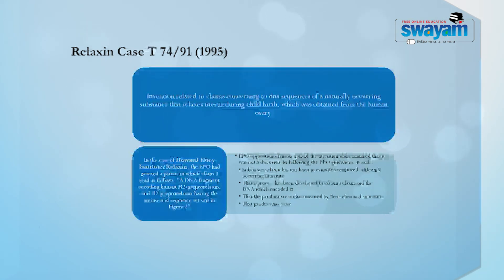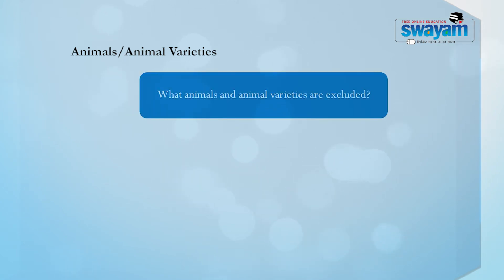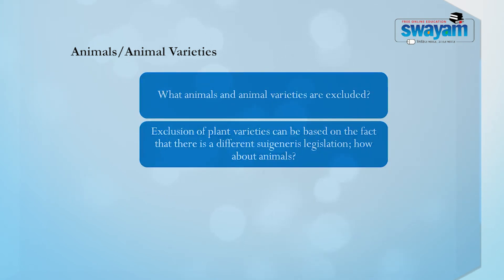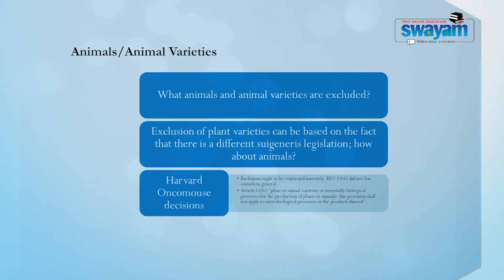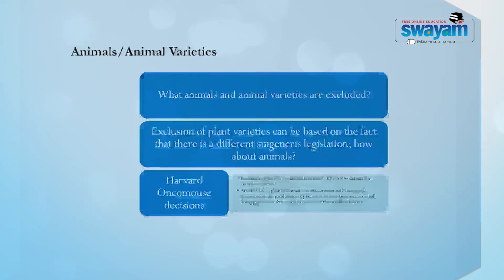This decision in Relaxin actually opened up a lot of issues relating to both ethical and legal dimensions of patent eligibility in Europe. In a subsequent decision pertaining to animal varieties, what animals and animal varieties were excluded by the European Patent Convention was an important question. The exclusion of plant varieties can be based on the fact that there are different sui generis legislations, but what about animals? In the Howard Oncomouse decision, the Howard Oncomouse is a genetically modified organism which was already patented in the United States, but the question of whether it would be patentable under Article 53 of the European Patent Convention arose. Specifically, the exclusion sought to be construed narrowly was under Article 53(b), and whether it did bar animals in general.